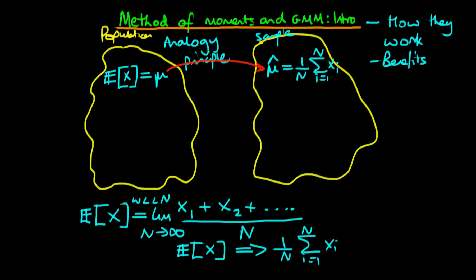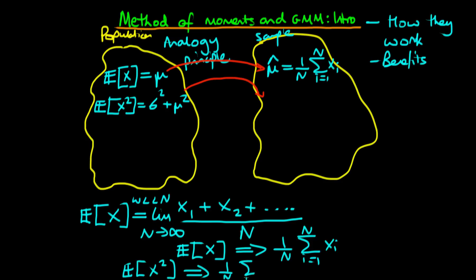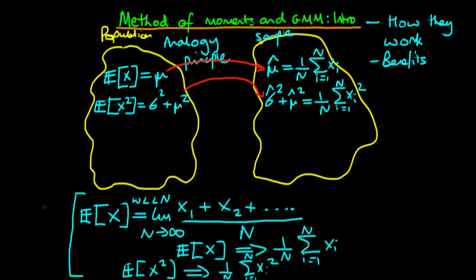How about if we have another population moment condition? If the expected value of x squared equals sigma squared plus mu squared, then via the analogy principle we simply replace the expected value of x squared by 1 over n times the sum from i equals 1 to n of xi squared. So we get that sigma hat squared plus mu hat squared equals 1 over n times the sum of xi squared. In general, whenever we have a population moment condition with an expectations operator applied to some function f of x, we replace it by 1 over n times the sum of f of xi.